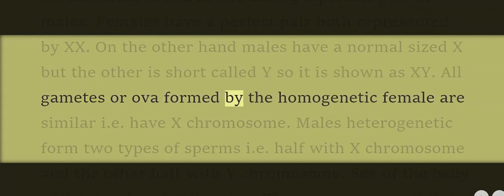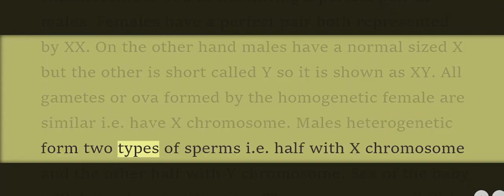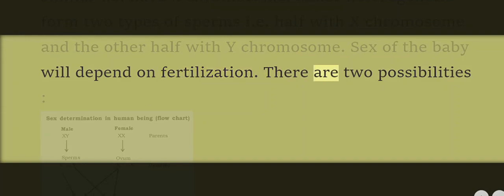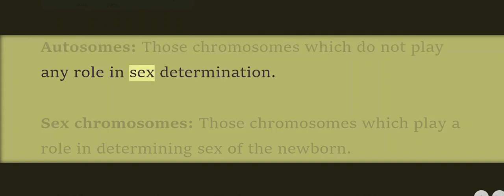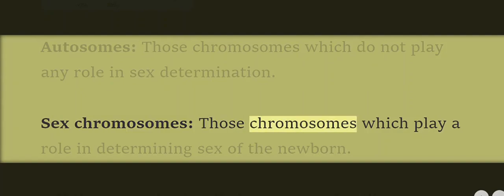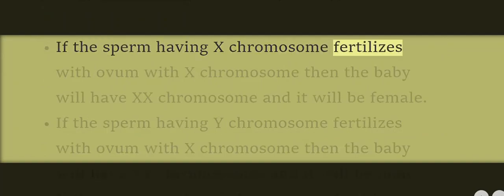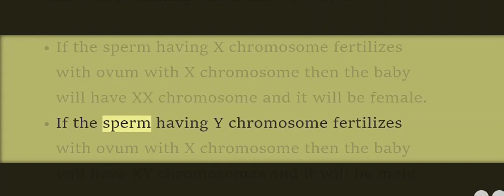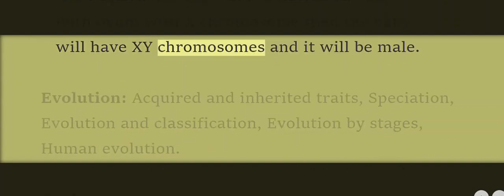All gametes or ova formed by the homogametic female are similar, i.e., all have the X chromosome. Males (heterogametic) form two types of sperms — half with X chromosome and the other half with Y chromosome. If the sperm having an X chromosome fertilizes an ovum with an X chromosome, the baby will have XX chromosomes and will be female. If the sperm having a Y chromosome fertilizes an ovum with an X chromosome, the baby will have XY chromosomes and will be male.